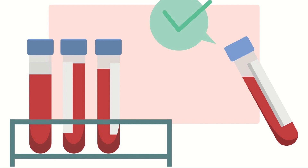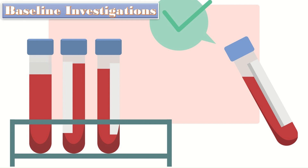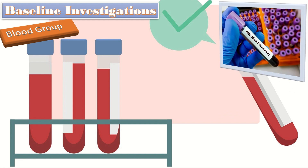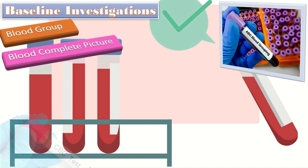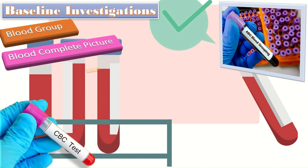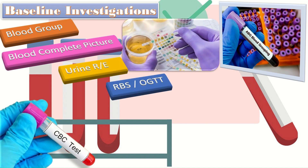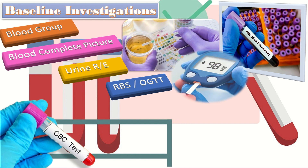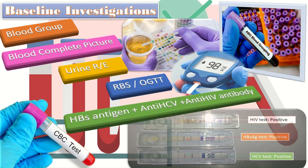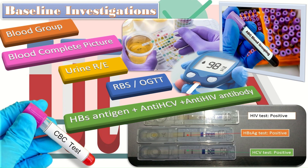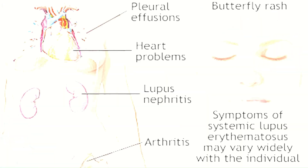For investigations, order blood group and Rh factor first. If the patient is Rh negative, check the husband's blood group to evaluate for Rh incompatibility. Other baseline investigations include complete blood picture, urine routine examination, random blood sugar (postprandial one hour in pregnant ladies) or OGTT especially in the Asian population, HBsAg, anti-HCV, and anti-HIV antibody.